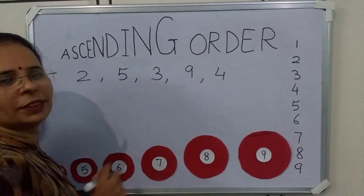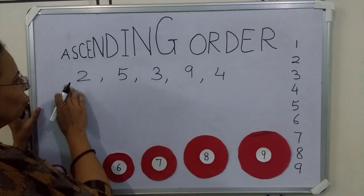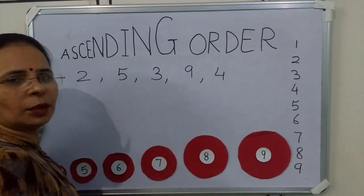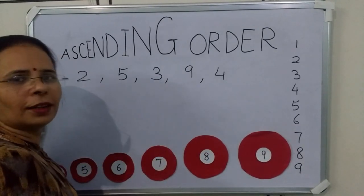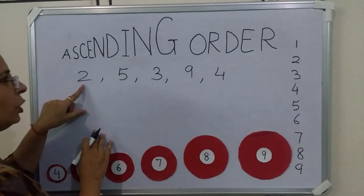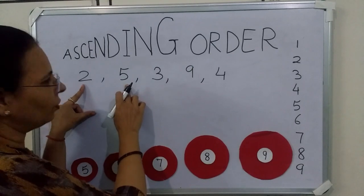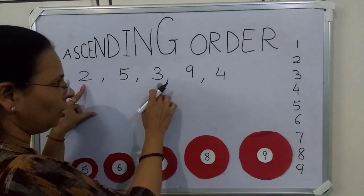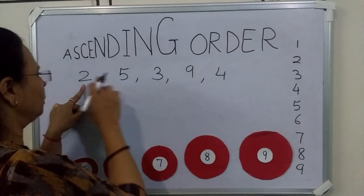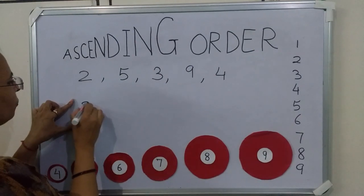Now we will see one more example. We have to arrange these numbers in ascending order. The first number is 2. Is 2 smaller than 5, 3, 9 and 4? Yes. So 2 we will write first.